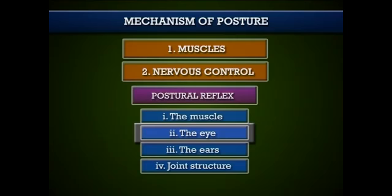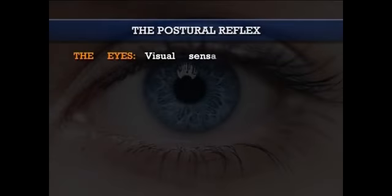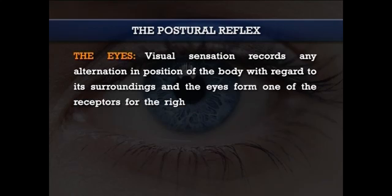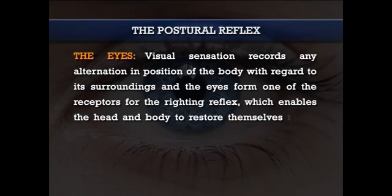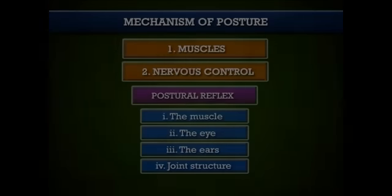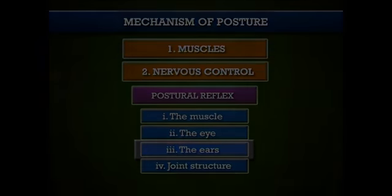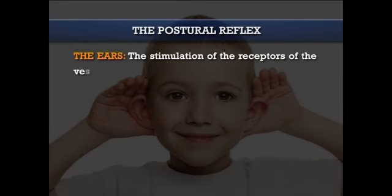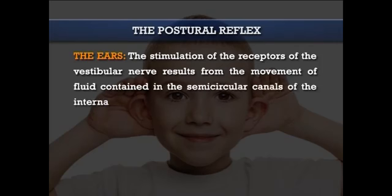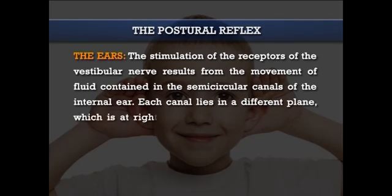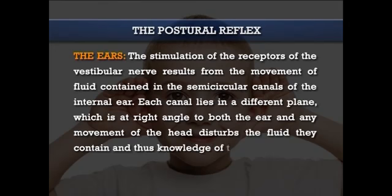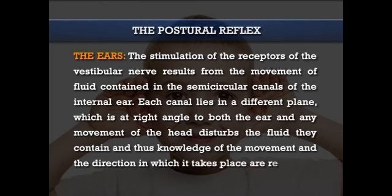The second receptor is the eye. Visual sensation records any alteration in the position of the body with regard to its surroundings. The eye forms one of the receptors for the righting reflex, which enables the head and body to restore themselves to the erect position from other less usual attitudes. The third one is the ear. Stimulation of the receptors of the vestibular nerve results from the movement of fluid contained in the semi-circular canals of the inner ear. These canals lie in different planes at right angles to each other, and any movement of the head disturbs the fluid, recording the movement and the direction in which it takes place.